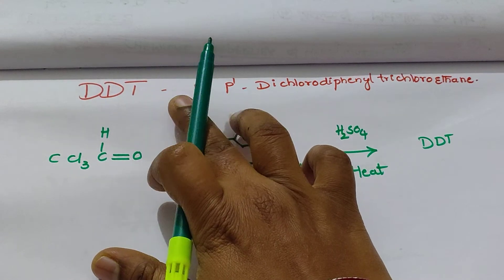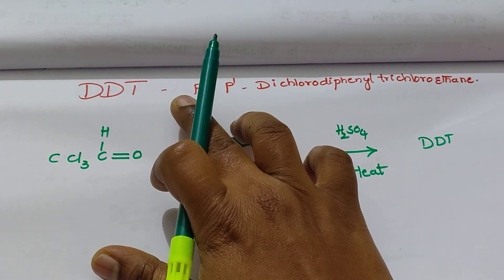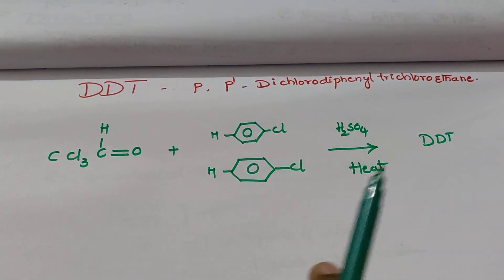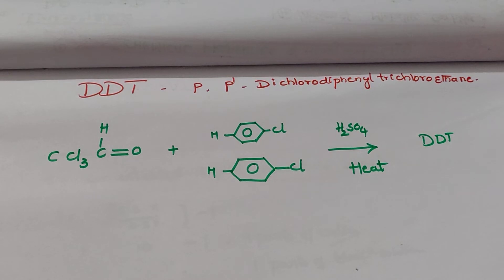DDT is used as an effective insecticide for mosquitoes, flies, and crop pests.